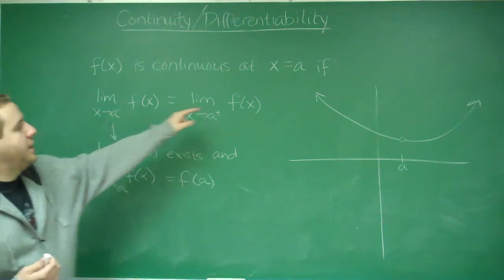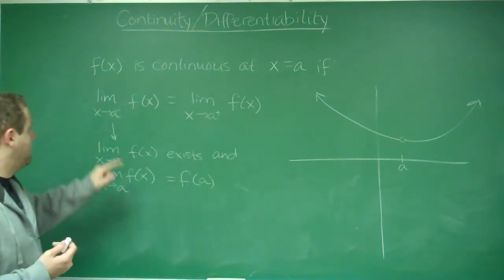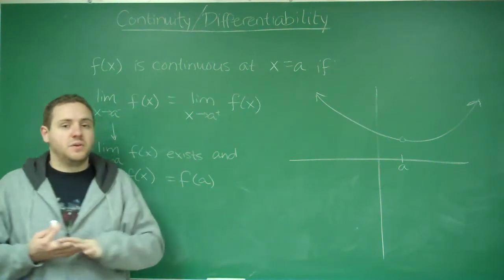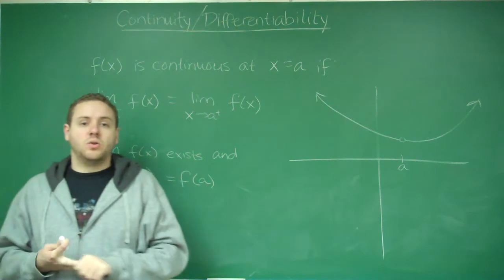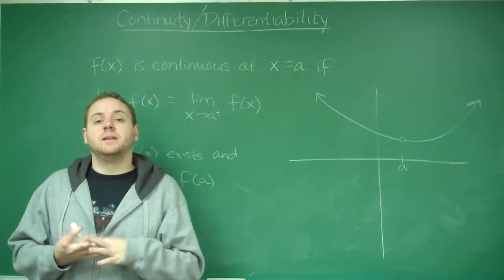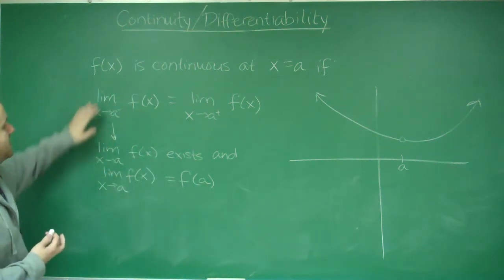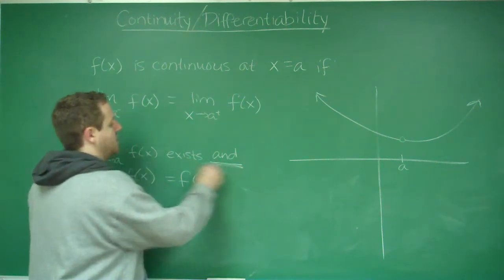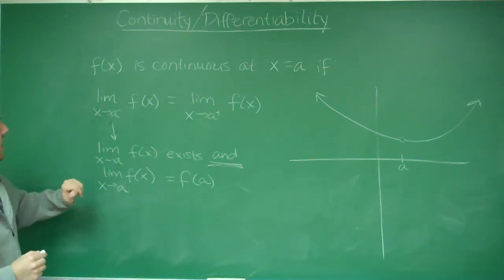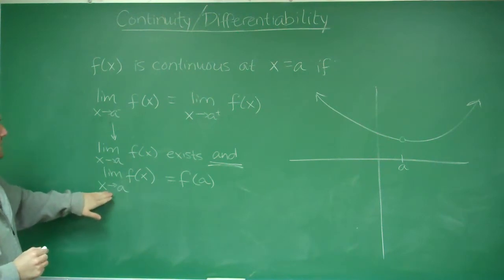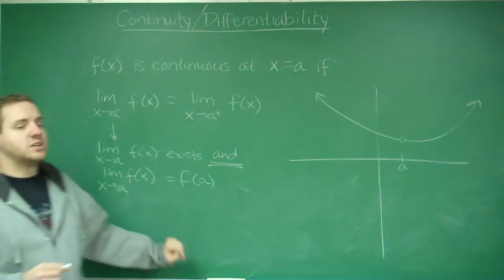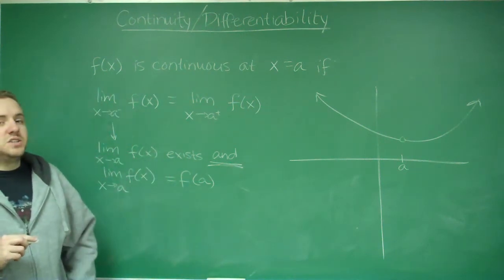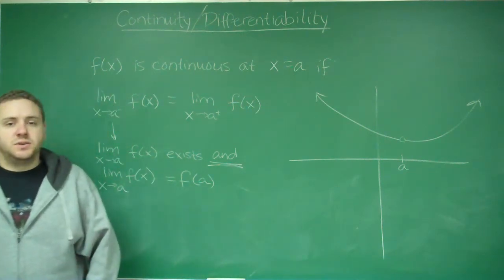f(x) is continuous at some point x equals a if the limit from the left and from the right of a of the function are equal. That means the limit needs to exist. But the other condition is that the limit as x approaches a of f(x) has to actually equal f(a). Those two conditions together define continuity.